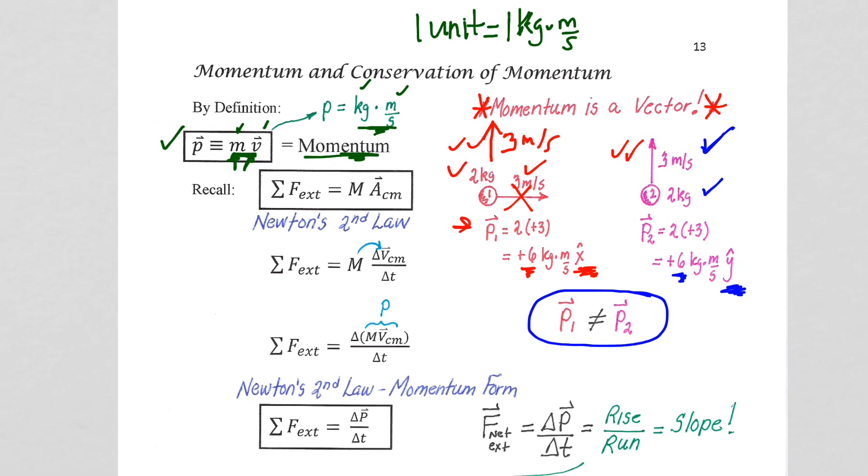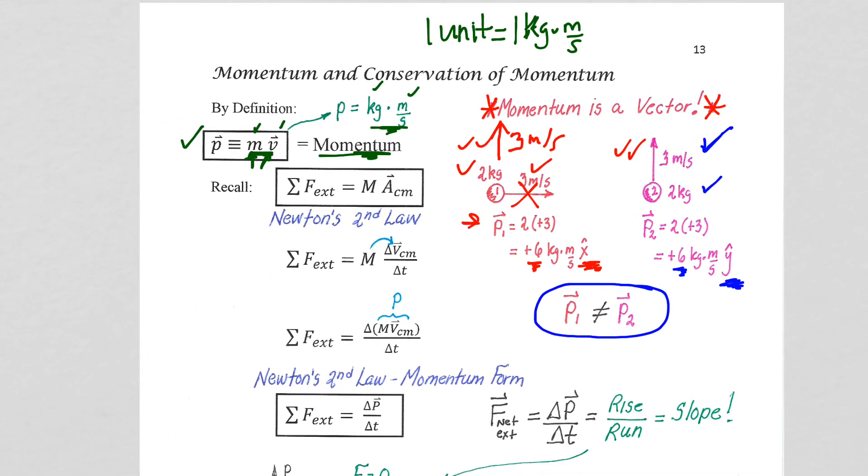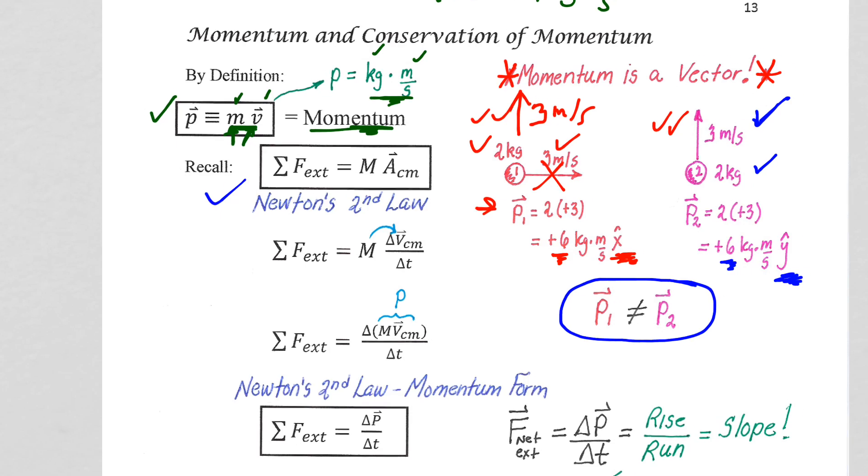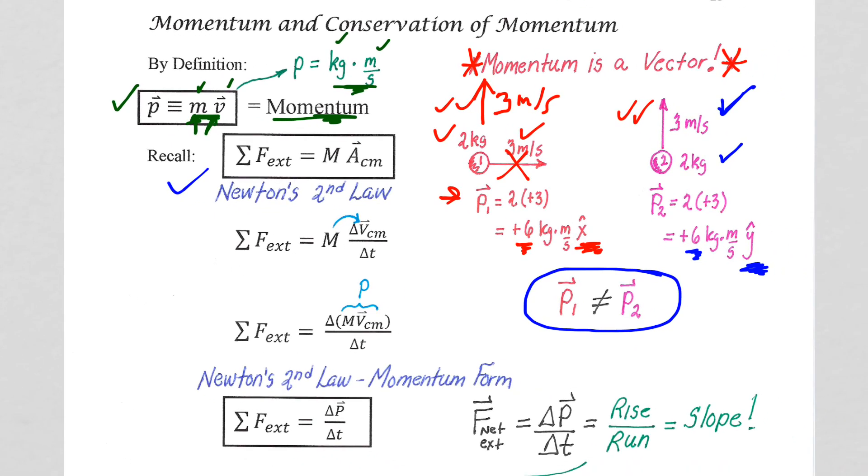We know Newton's second law, F equals MA. So that's what I have here. Sum of the forces external equals mass times the acceleration of the center of mass. Well, the acceleration of the center of mass is delta V over delta T. If the mass of the system is not changing, then it's a constant. I can bring it in with the delta V and voila, look, here's where momentum comes from.